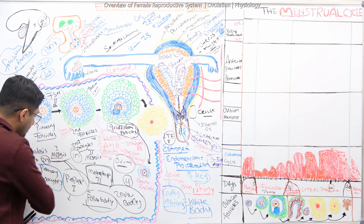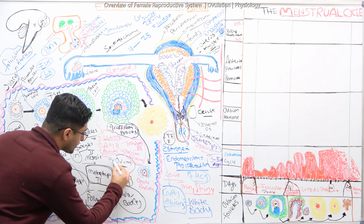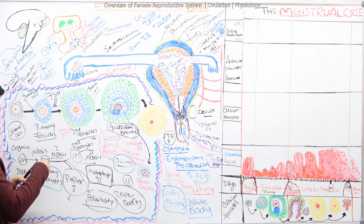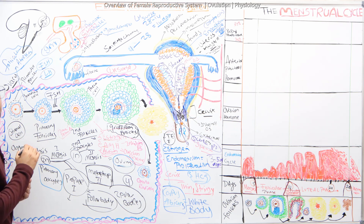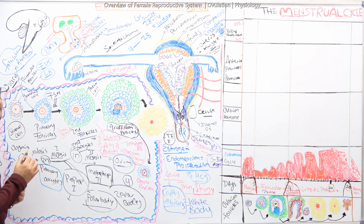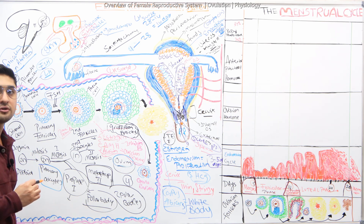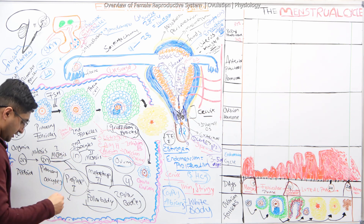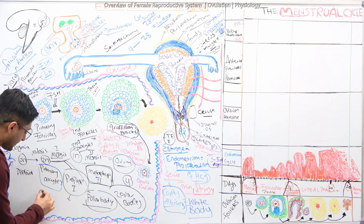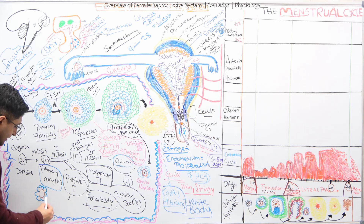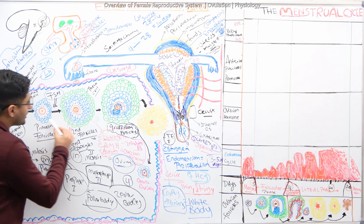This overall process is called oogenesis — because at the end we're trying to get an ovum. Now looking at the follicular structure: this is the oocyte, covered by flattened cells called granulosa cells. We call these structures follicles because a follicle basically means a cavity lined by epithelial cells.